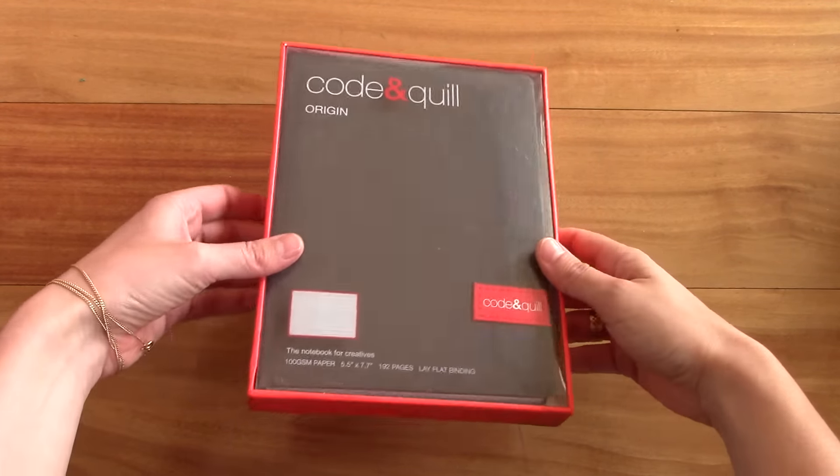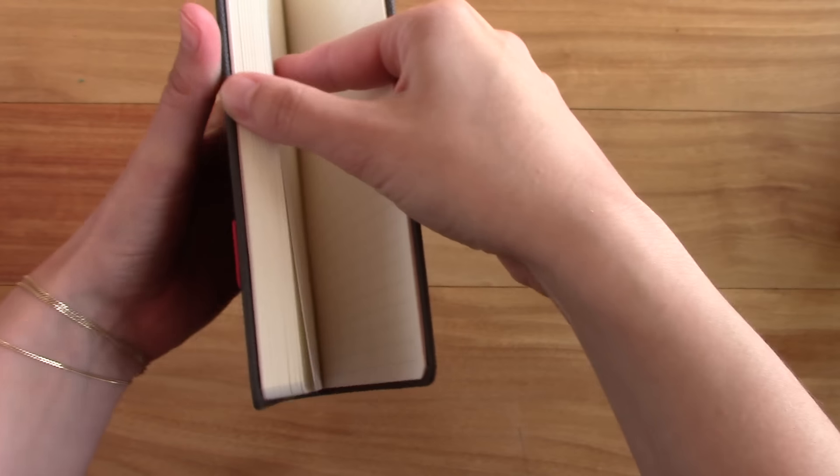And as I said, stitched and bound six times. And the dimensions are 5.5 inches by 7.7 inches or 14 cm by 19.5 cm. And as I said, it's 192 pages.